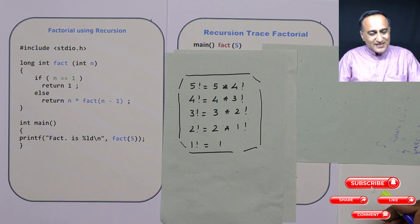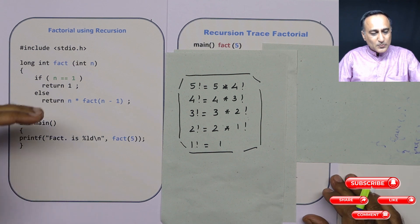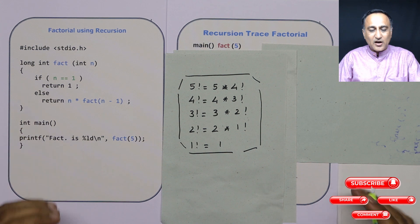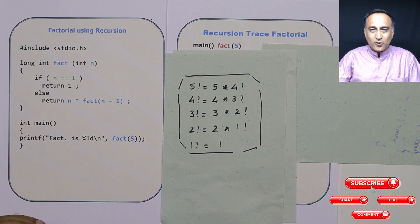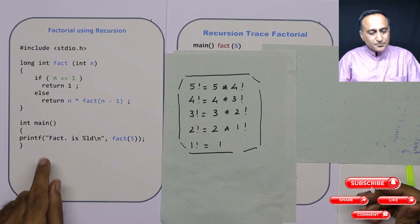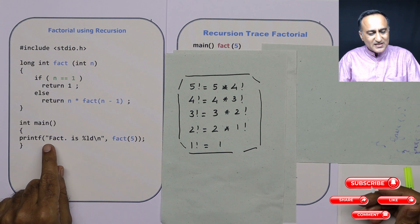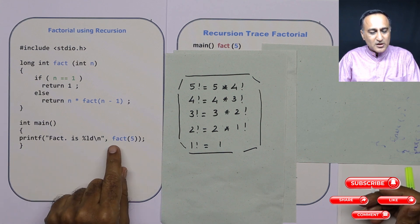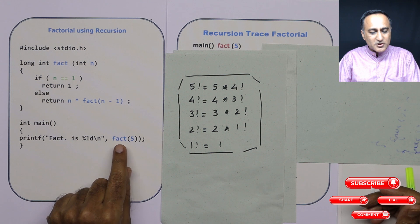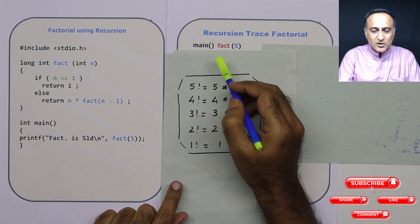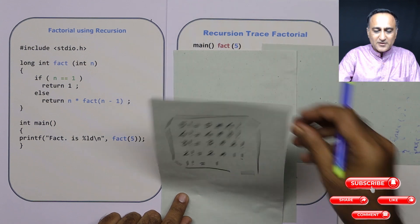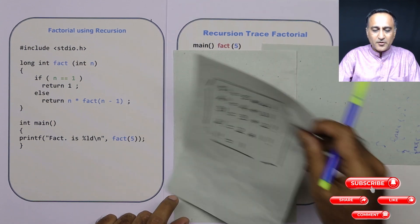Let's trace the recursion of this factorial problem to really understand how the factorial calculation happens through recursion. Let us say I am interested to find the factorial of the number 5. So I call the function fact(5). In main, I am calling fact(5) — that is the first step we are trying to do.